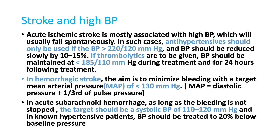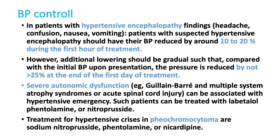Following these guidelines strictly is critical, otherwise the patient can sustain severe brain damage from disproportionate BP reduction. In hypertensive encephalopathy, reduce BP by 10 to 20 percent during the first hour. In autonomic dysfunction — such as Guillain-Barré syndrome, multiple system atrophy, or acute spinal cord injury — the patient can have fluctuating BP, tachycardia, and bradycardia. If the patient has tachycardia with high BP, labetalol is a good choice; otherwise, nitroprusside can be used.